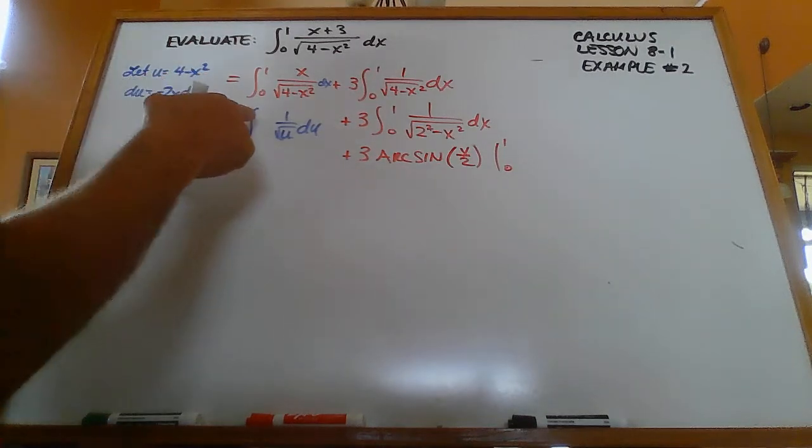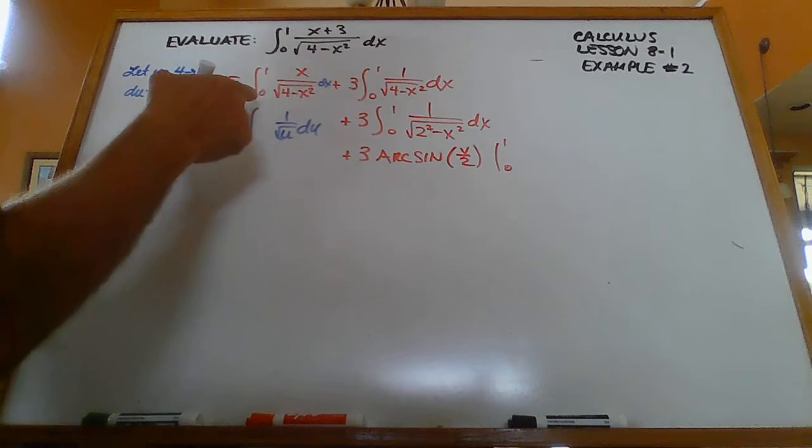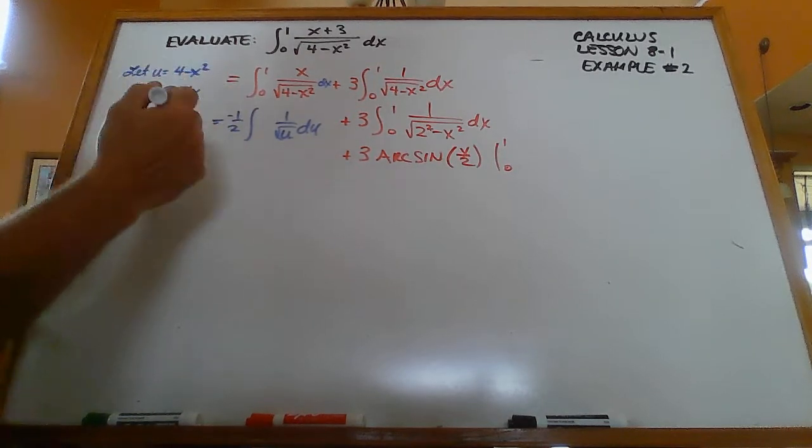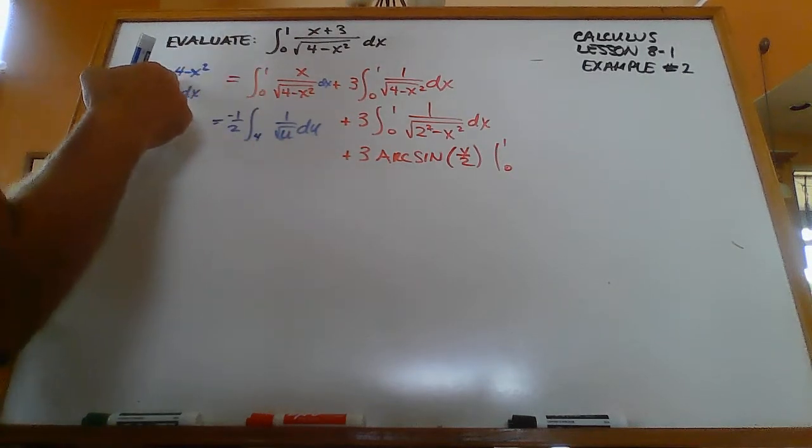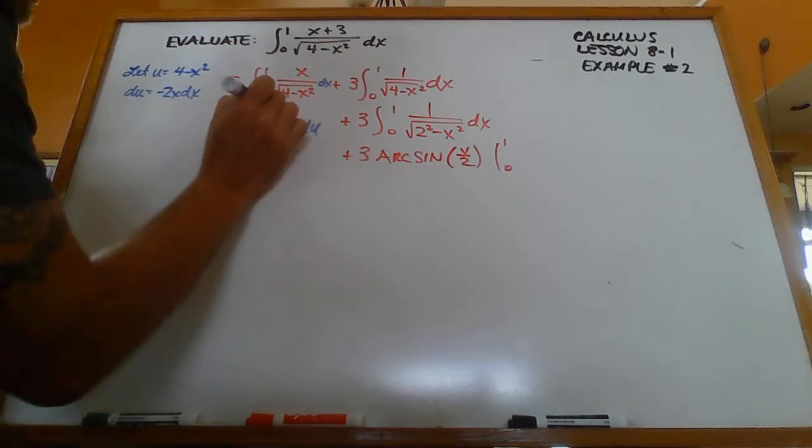And then if I want to figure out what these are, I need to substitute those into here. So if I substitute in 0, I get 4 minus 0 squared is 4. And if I plug in 1, I get 4 minus 1 squared, that's 3.